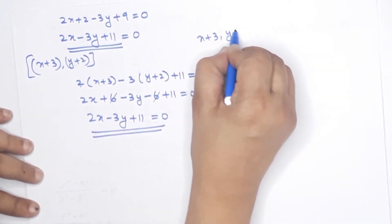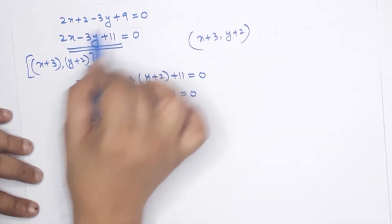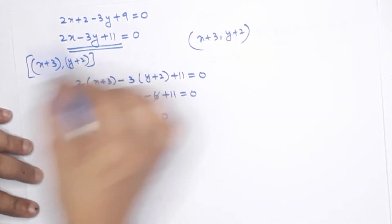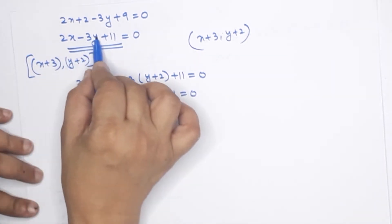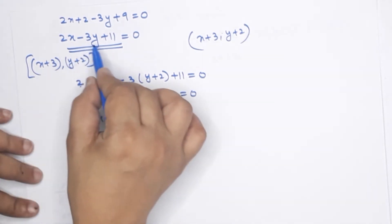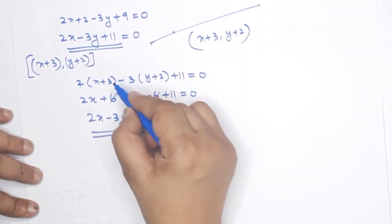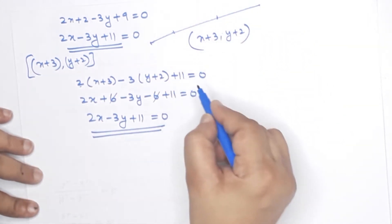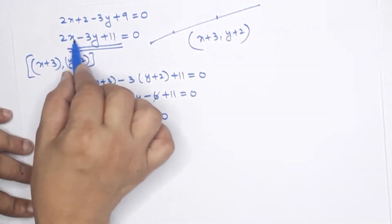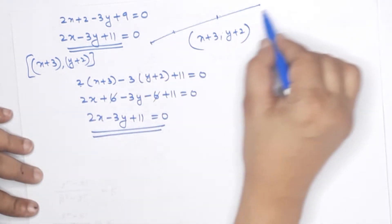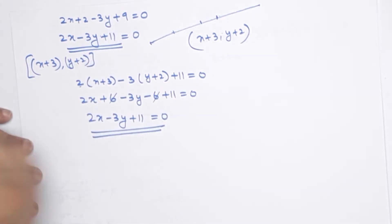Then 2x minus 3y plus 11 equals 0. The point (x+3, y+2) satisfies the same equation. If I add this point into this equation, it gives the same equation — that means this point is on the same line. If any point satisfies this equation, then all such points form one line.